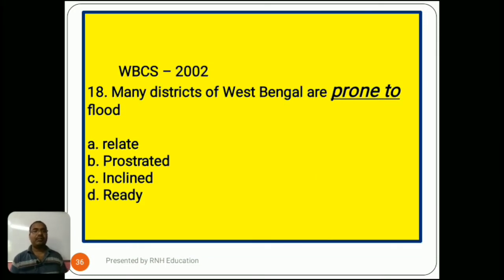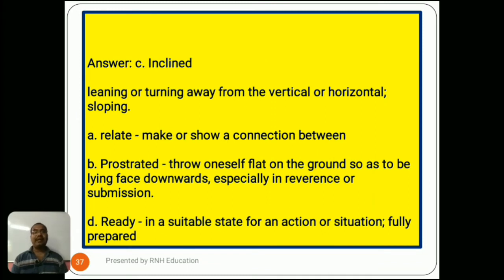Question number 18, from the year 2002: 'Many districts of West Bengal are prone to flood.' Options are A) relate, B) prostrated, C) inclined, D) ready. The answer is C) inclined, meaning leaning or turning away from the vertical; in this context, 'prone to' means inclined. Option A, relate, means make or show a connection between. Option B, prostrated, means throw oneself flat on the ground in reverence or submission. Option D, ready, means in a suitable state, fully prepared.